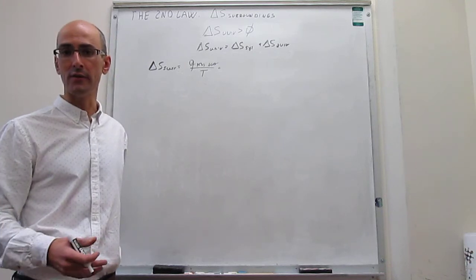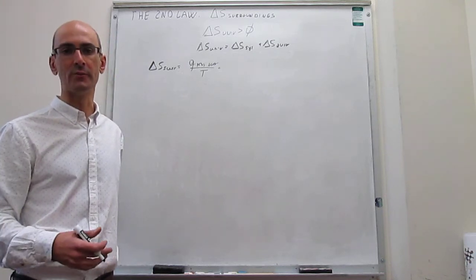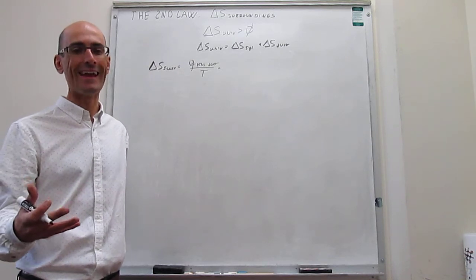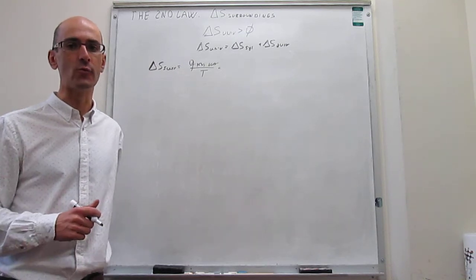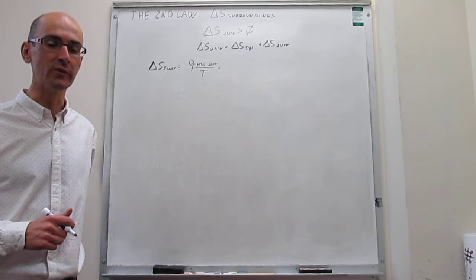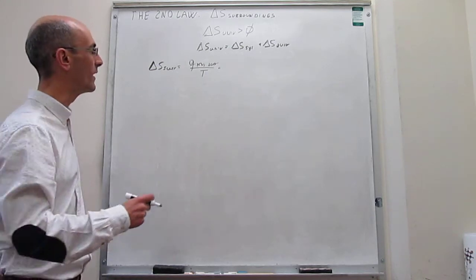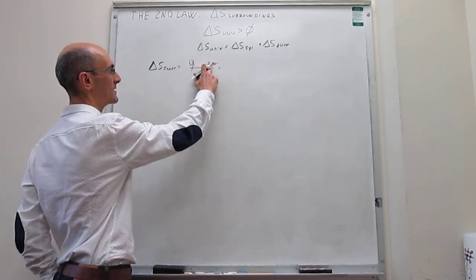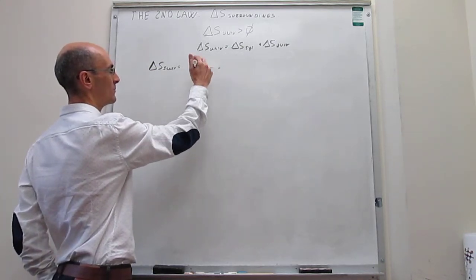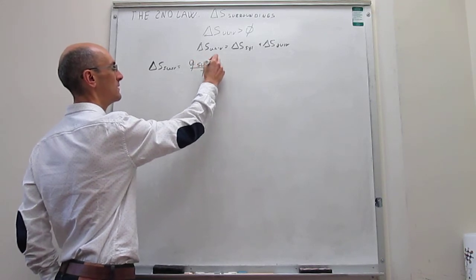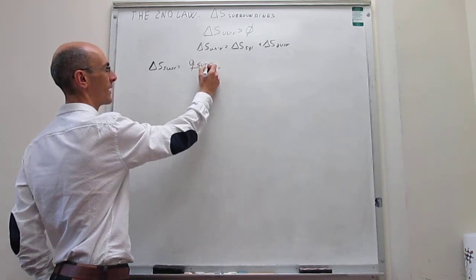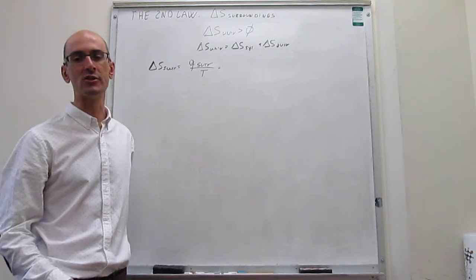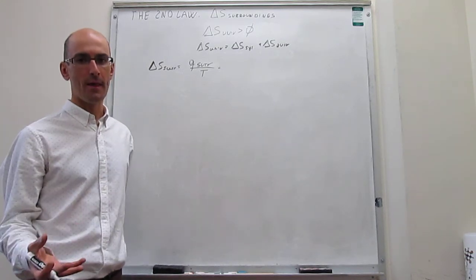That is essentially the definition of a reversible process. What that means is that everything in the surroundings will actually be reversible, so we can drop the 'reversible' label from the surroundings equation. The reason is simply that the surroundings are so large that any energy exchange with the system is effectively infinitesimal and therefore always reversible.